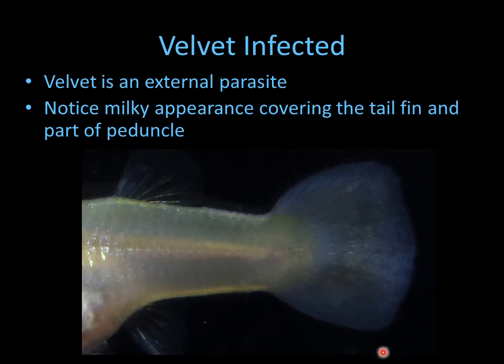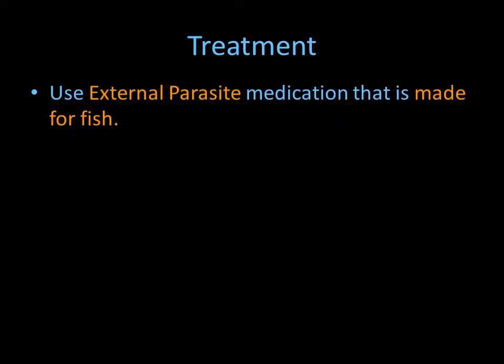The parasites are covering the fish and giving it that velvety look. The tail isn't transparent — it's opaque and milky.